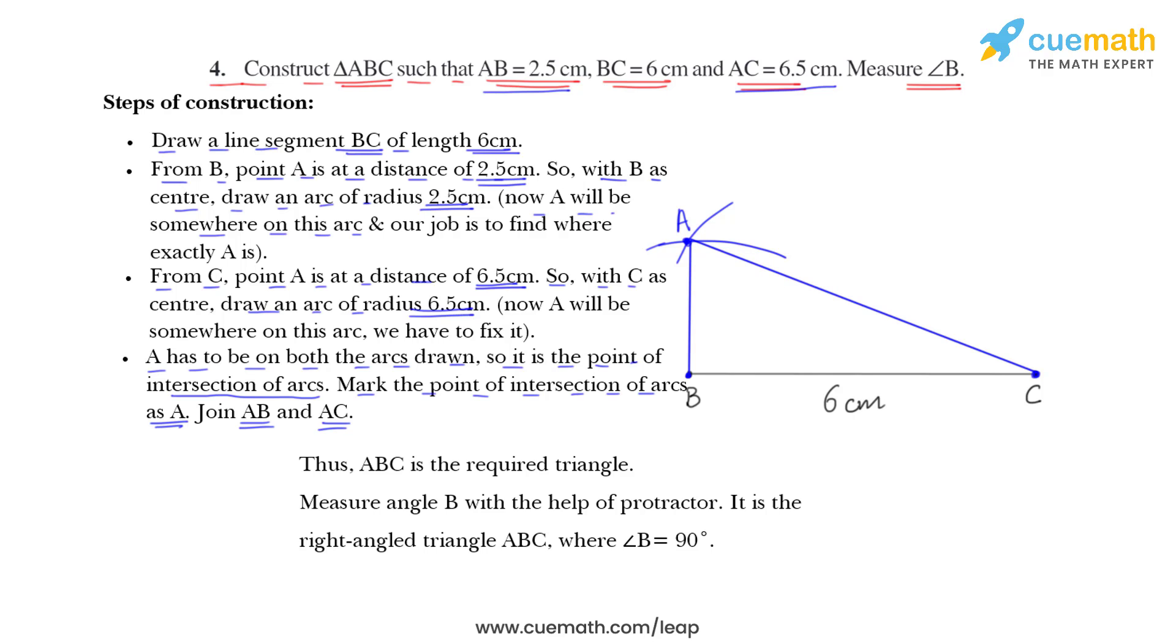So, we got our triangle. Thus, triangle ABC is the required triangle. Now, measure angle B with the help of a protractor. You will find that this is 90 degrees and as this is 90 degrees, it is a right angled triangle. So, this triangle ABC is the required triangle whose one angle is 90 degrees and therefore, it is a right angled triangle.